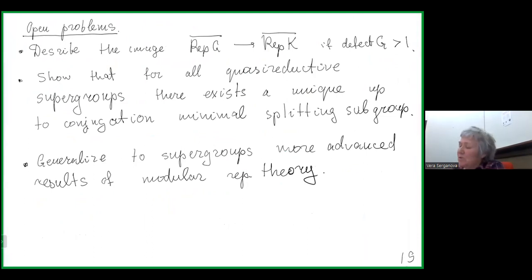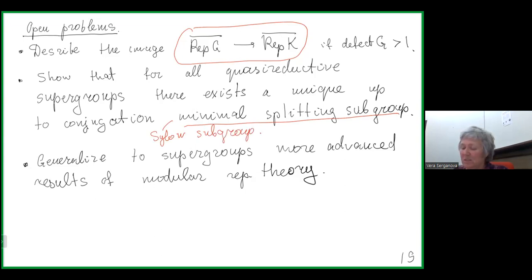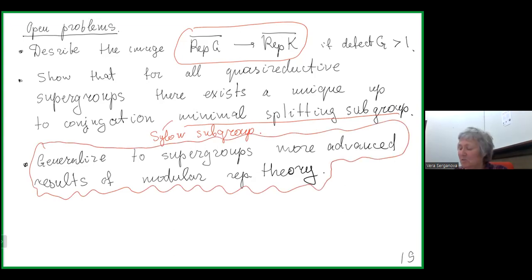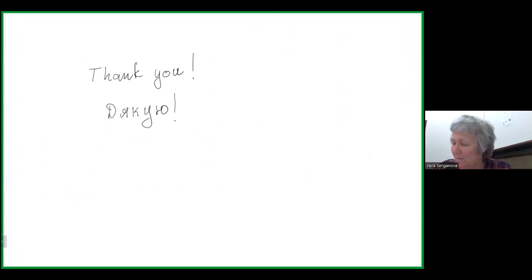This generalizes the second result I mentioned at the beginning. Some open problems: we really would like to understand the image of this functor in general. Next, we would like to show that for all supergroups the minimal splitting subgroup — our analog of the Sylow subgroup — exists and is unique up to conjugation. And of course it is desirable to look at more advanced results from modular representation theory of finite groups and try to generalize them to supergroups. Thank you very much for your attention.